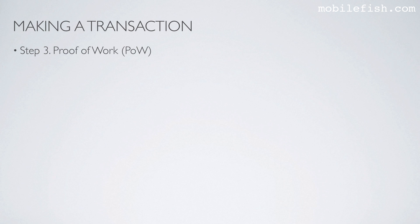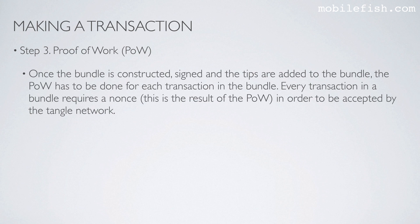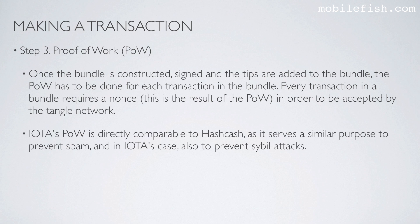Step 3: Proof of work. Once the bundle is constructed, signed, and the tips are added to the bundle, the proof of work has to be done for each transaction in the bundle. Every transaction in the bundle requires a nonce — this is the result of the proof of work — in order to be accepted by the tangle network. IOTA's proof of work is directly comparable to a hash cache, as it serves a similar purpose to prevent spam, and in IOTA's case also to prevent sybil attacks.